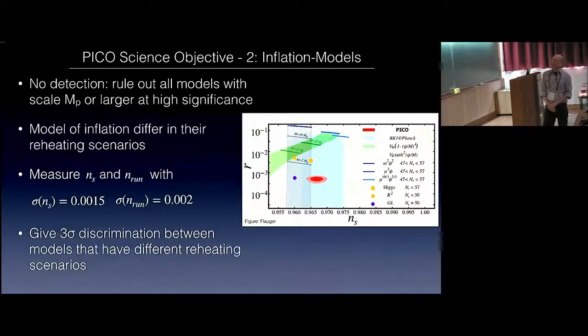Science objective number two is to rule out all models with a mass of a Planck scale in the potential or larger at high significance. Models of inflation differ in the reheating scenarios. We should be able to measure sigma n_s to 0.0015, the running to 0.002. This is about a factor of three improvement for both over Planck, and this should give three sigma discrimination between models that have different reheating scenarios.